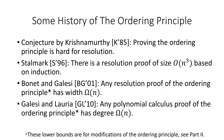Let me give a bit of history for what's known about the ordering principle. The ordering principle was introduced by Krishnamurthy, who conjectured that proving the ordering principle is hard for resolution. This conjecture was refuted by Stalmark, who showed that there is a resolution proof of size O(n³) based on induction. That said, Bonet and Gillesi showed that any resolution proof of the ordering principle has width omega(n). Later, Gillesi and Laurier showed that any polynomial calculus proof has degree omega(n). These lower bounds are for modifications of the ordering principle.